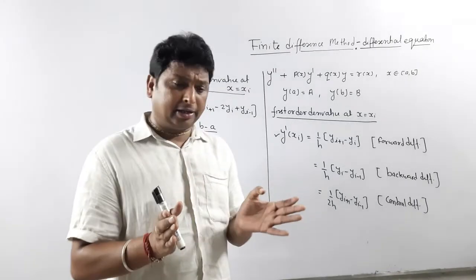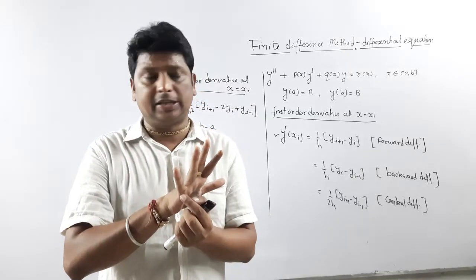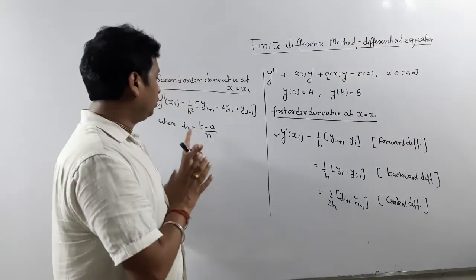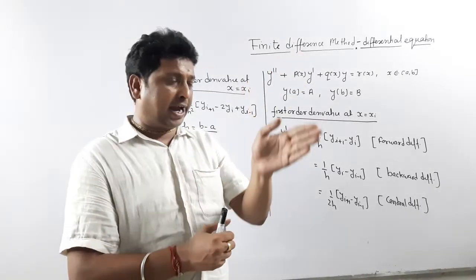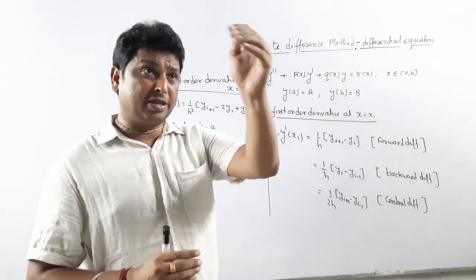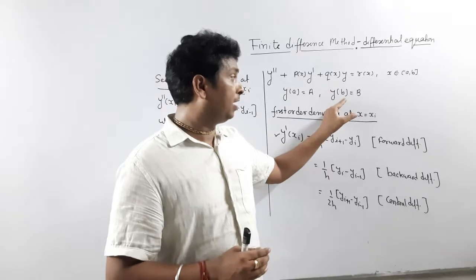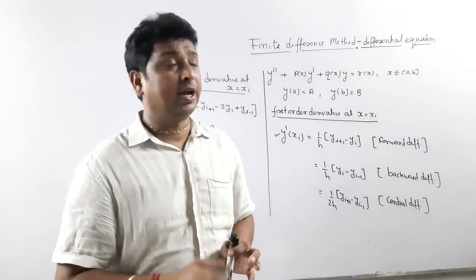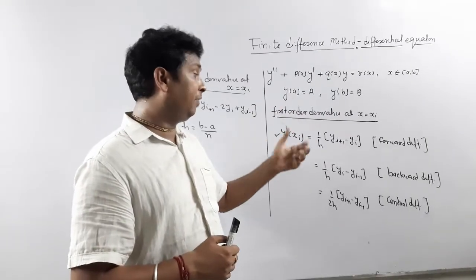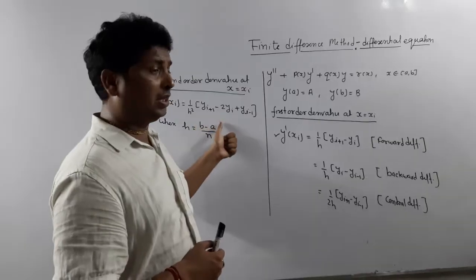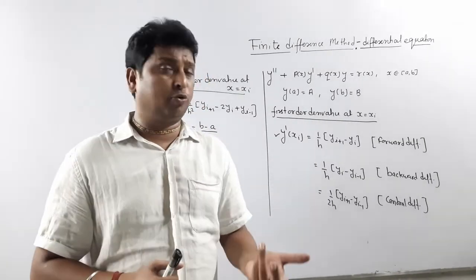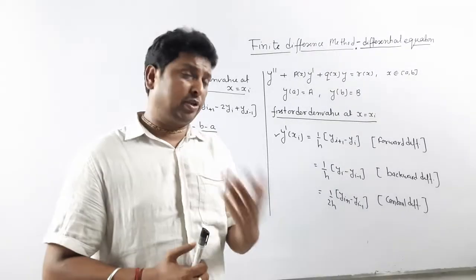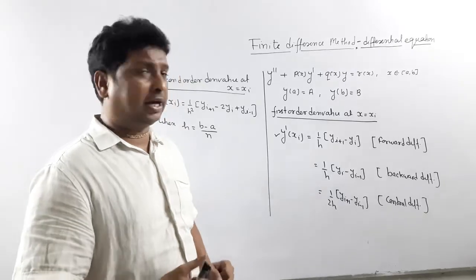To summarize the steps: first calculate h — either it is given or you divide the interval into four equal parts using h = (b − a)/n. Once you have h, tabulate x values and the corresponding y values. The boundary conditions give y at the start and end; the intermediate values must be calculated by substituting y' and y'' into the differential equation and solving the resulting system.